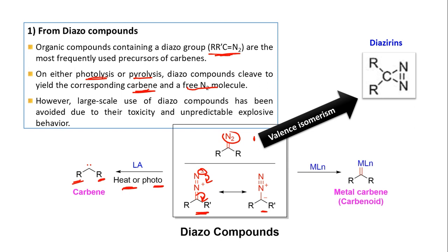If we use a metal associated with some diazo compounds (MLn type), we can also get metal carbene, which is basically carbinoid. What is carbinoid is discussed in detail in the previous video — you can watch that video.